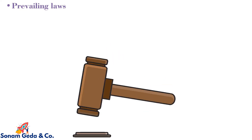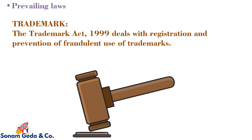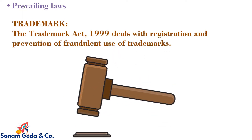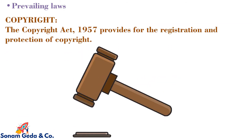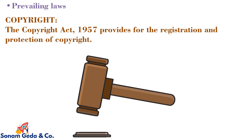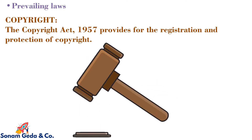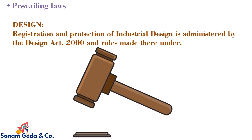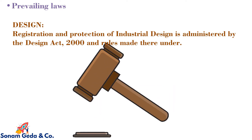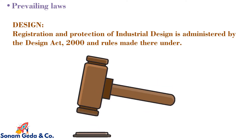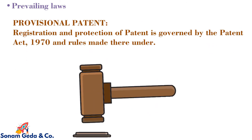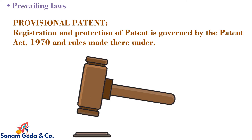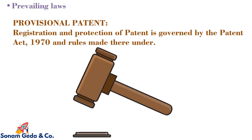Prevailing laws: In case of trademark, the Trademark Act 1999 deals with registration and prevention of fraudulent use of trademark. In case of copyright, the Copyright Act 1957 provides for the registration and protection of copyright. In case of design, registration and protection of industrial design is administered by the Design Act 2000 and rules made thereunder. For patent, registration and protection of patent is governed by the Patent Act 1970 and rules made thereunder.